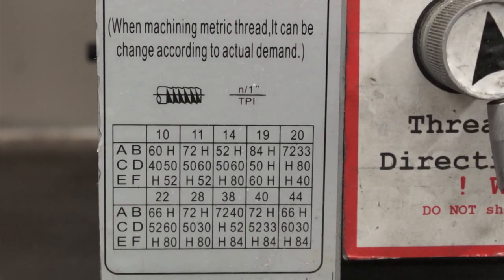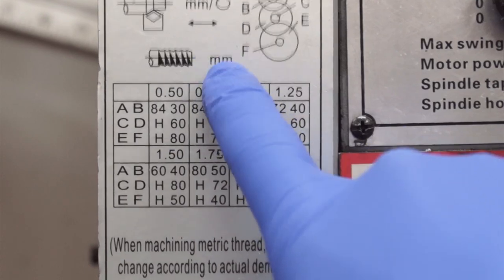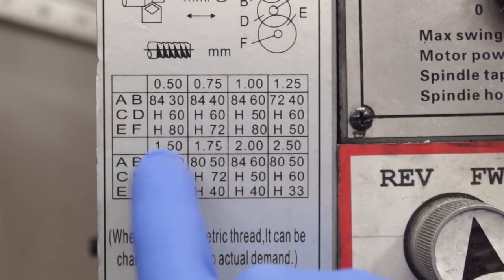There are two charts on this lathe, standard for those who measure everything with the size of their feet and metric for those who realize feet come in many different sizes.